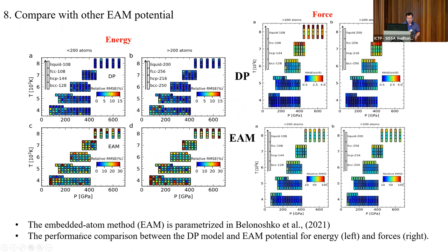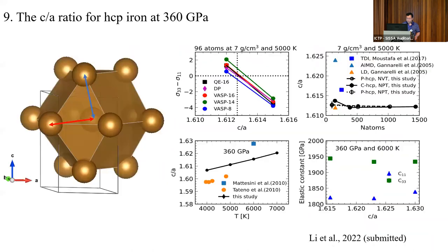We also compare our DP model against the embedded atom method (EAM), which has been frequently used to study metallic systems. We use the parameters from the Ackland 2002 paper. For the EAM potential, the relative energy error — the energy difference divided by the energy fluctuation — is more than 10%, and the relative force error is more than 30%. This is a little surprising because people previously thought EAM was very accurate, but actually it is not that accurate.